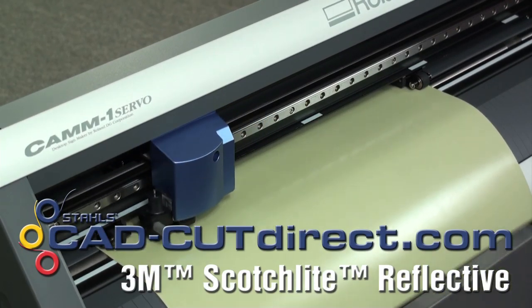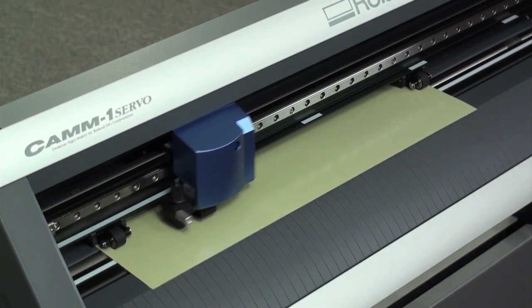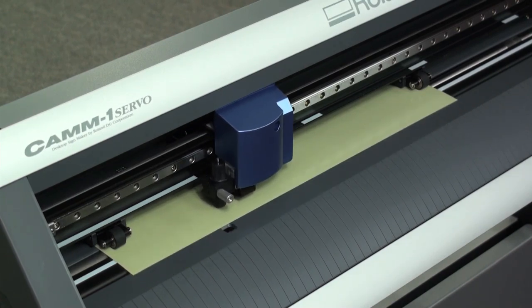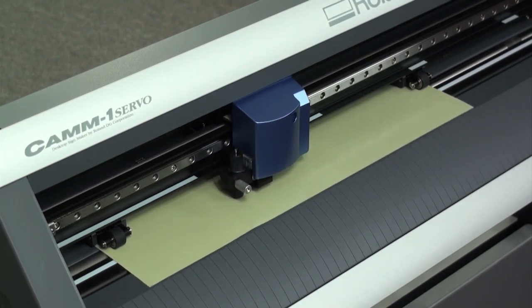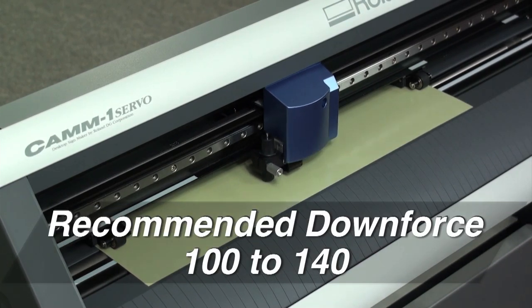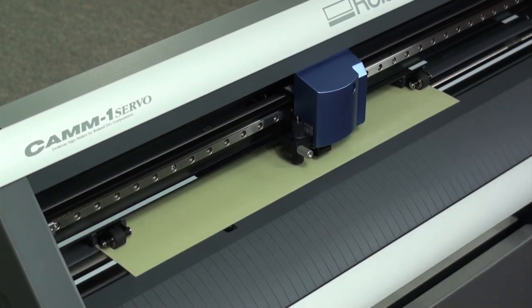With the 3M Scotchlite Reflective, there's no liner to peel. Simply load the material and cut. When cutting this material, be sure to set your blade depth and cutting down force accordingly. On a scale of 0 to 250 grams on the GX24, you'll need between 100 and 140 grams of down force.